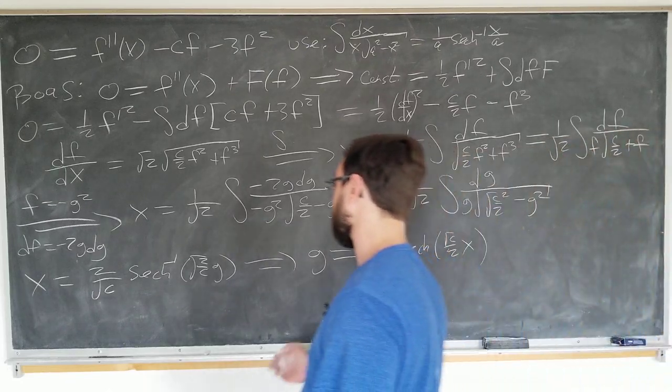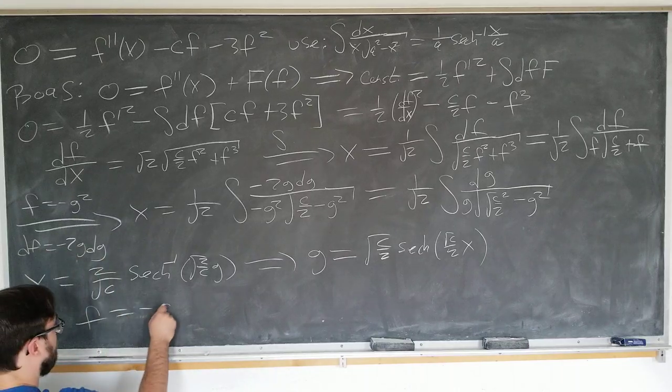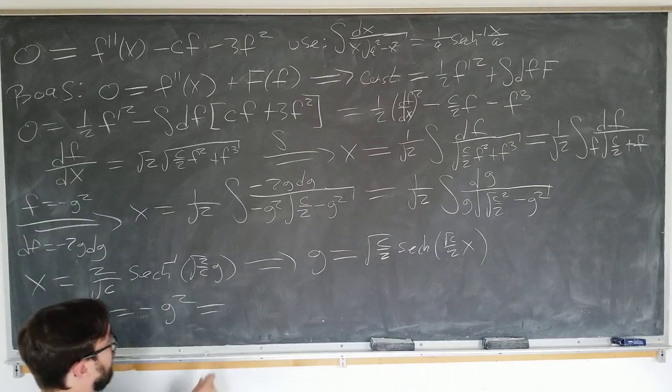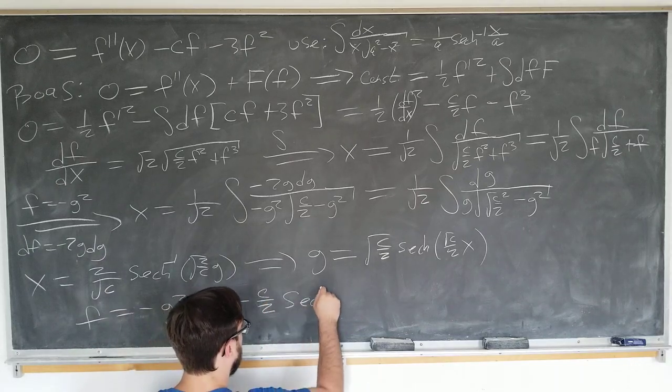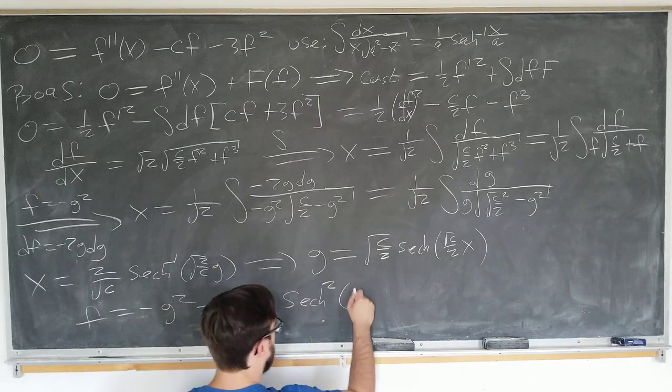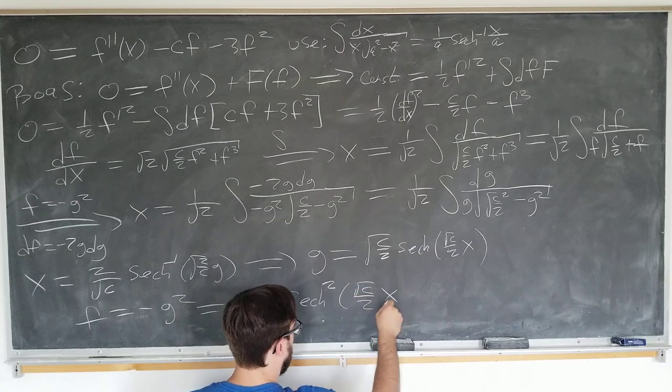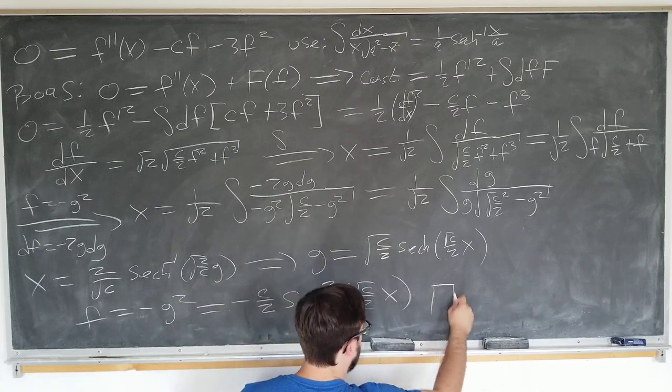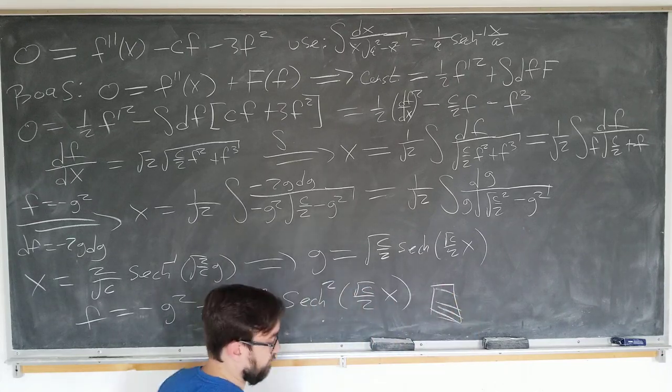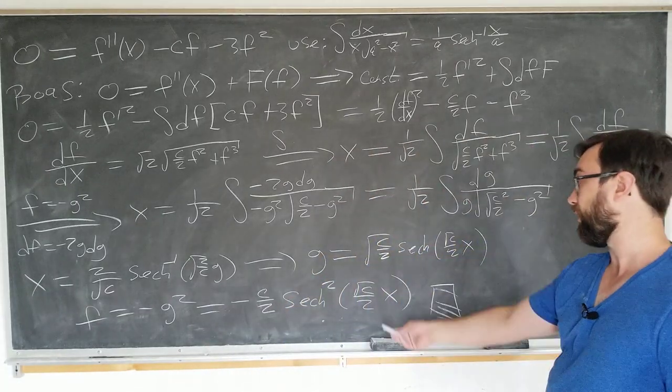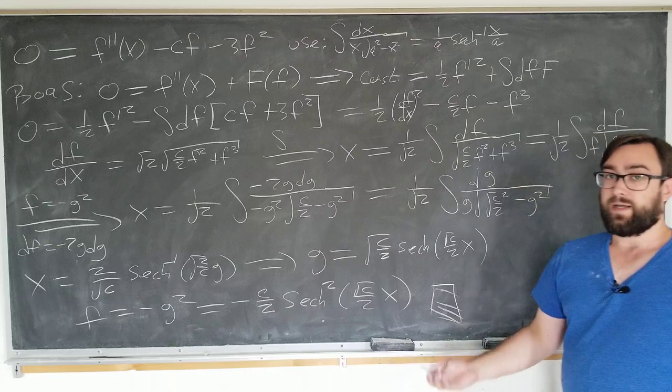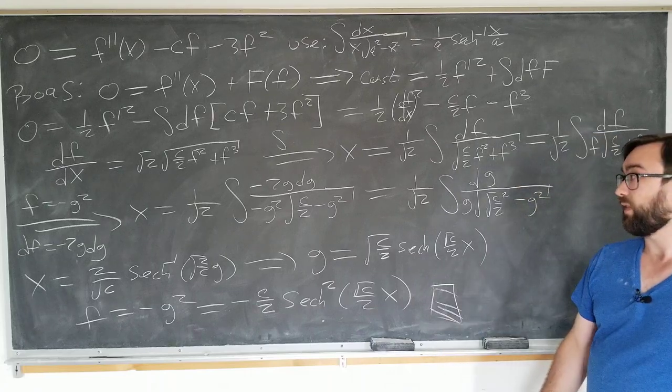Well, that's pretty straightforward. So f is just minus g squared, which is minus c over 2 sech squared square root of c over 2 x. And great, we have completed our solution. Notice this is quite similar to the Pöschl-Teller potential. We've got a constant time secant squared, and it's pretty interesting. Pretty interesting indeed.